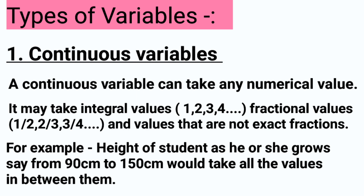A continuous variable may take integral values: 1, 2, 3, 4, and so on. It also takes fractional values — like 1/2, 2/3, 3/4. And if a value is not an exact fraction, we will also count it — like root 2, root 3, root 2.1. These will also be counted in our continuous values.